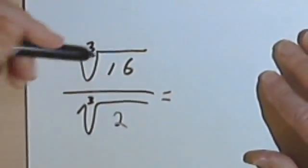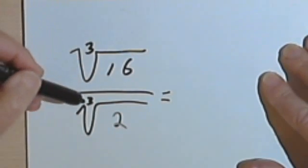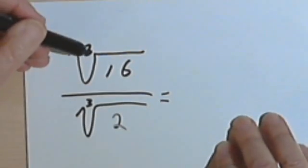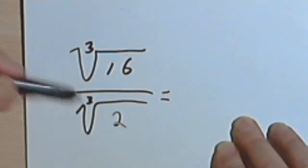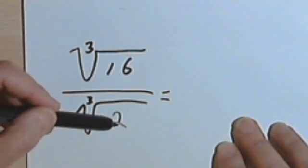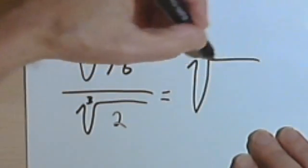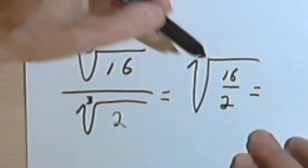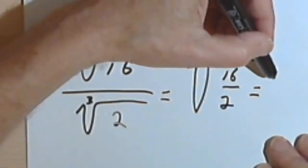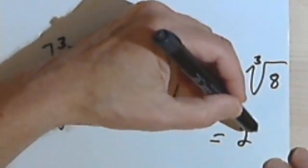These rules are also going to work for other kinds of roots — cube roots, fourth roots, whatever index you happen to have, whatever root you're taking. For example, the cube root of 16 over the cube root of 2: if I divide 16 by 2, I get 8, and 8 is a perfect cube. So I'll turn this into the cube root of 16 over 2, which equals the cube root of 8. And the cube root of 8 is just 2.